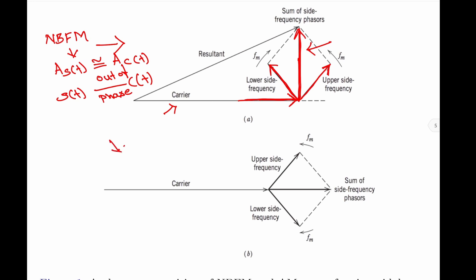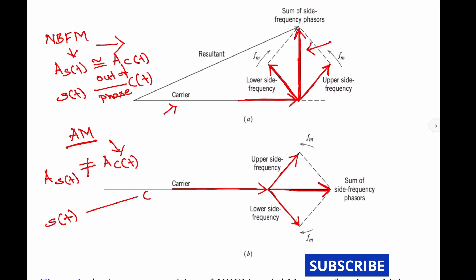Coming to the second phasor diagram, which is for amplitude modulation: the carrier is the reference, the upper sideband and lower sideband are shown, and the angle between upper and lower sideband is 90 degrees. However, for amplitude modulation the sum of the side frequency phasors is in phase with the carrier signal. So for AM, the amplitude of S(t) is not equal to the amplitude of the carrier C(t), but S(t) and C(t) are in phase with each other.